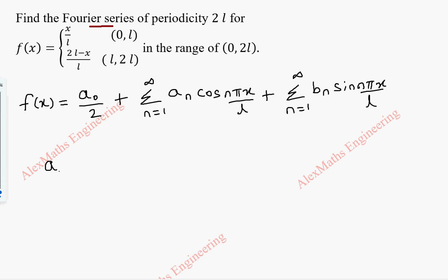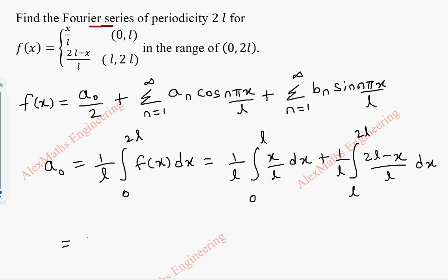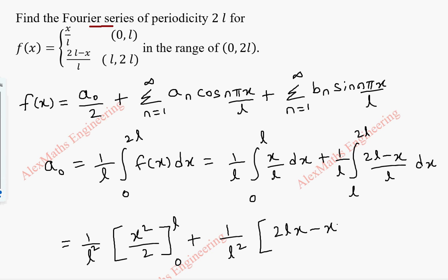To find a₀, the formula is 1 by L integral 0 to 2L of f of x dx. But f of x is made up of two parts: from 0 to L the function is x by L, and from L to 2L the function is (2L minus x) by L. We keep 1 by L and integrate: x gives x squared by 2 over L squared, with limit 0 to L. Similarly the second integral becomes 1 by L squared of (2Lx minus x squared by 2) from L to 2L.